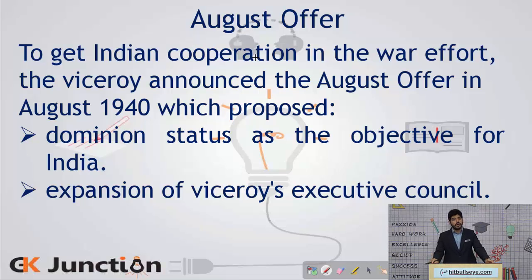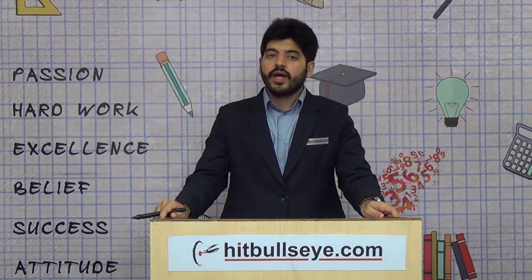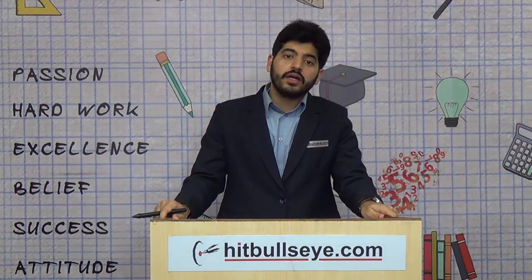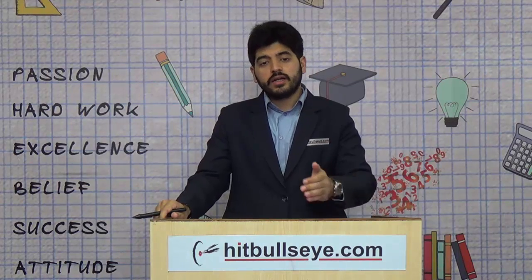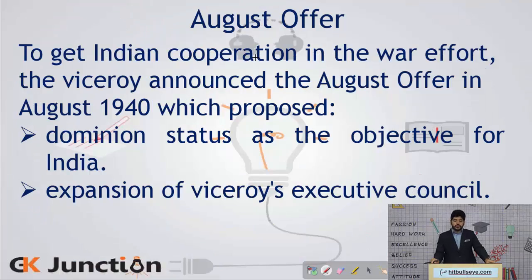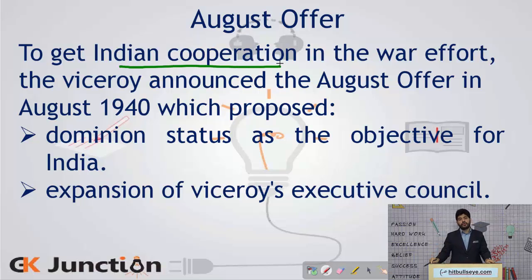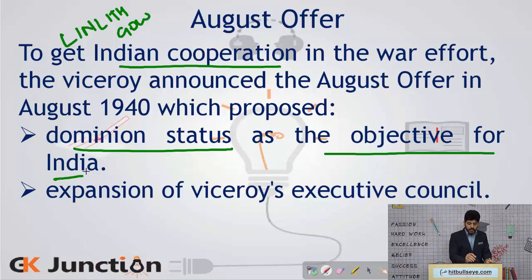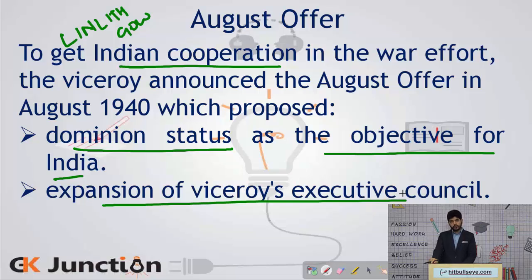Starting with the August Offer — while discussing it and subsequent events, we have to know that this is the period in which World War Two started, around 1939, and ended in 1945. The main purpose of the August Offer was to secure Indian cooperation in the British war effort. Viceroy Linlithgow forwarded the August Offer to the Indian parties.